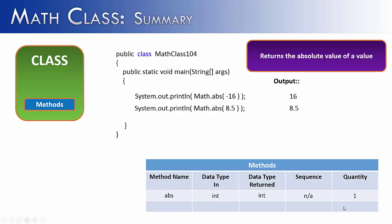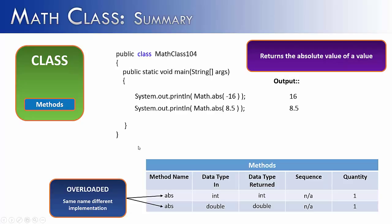You may be wondering why there's an extra line. These are actually two separate methods with the exact same name. One takes in an integer and returns an integer; the other takes in a double and returns a double. When you have a method with the exact same name but implemented differently, it's called overloading, or the method is overloaded. The ABS method is one of those overloaded methods.